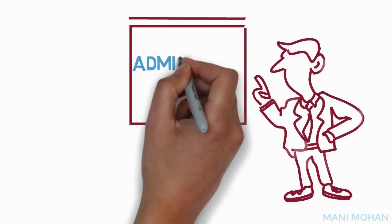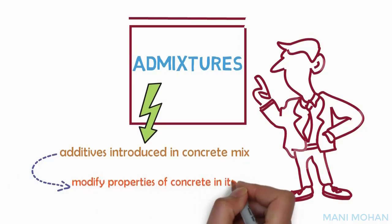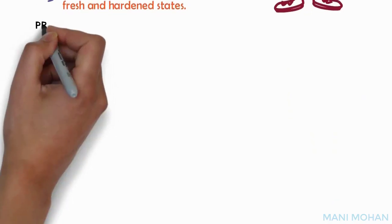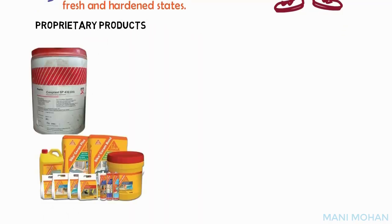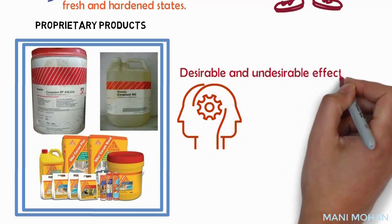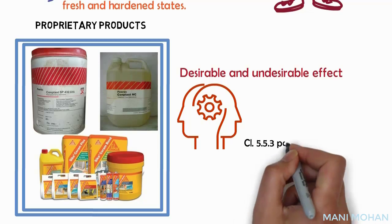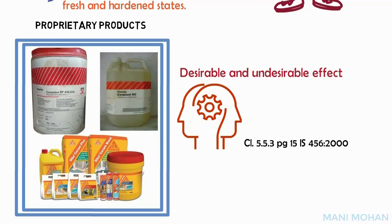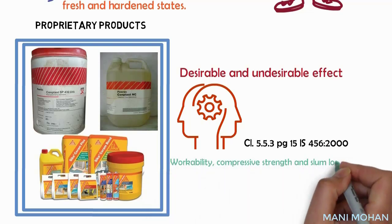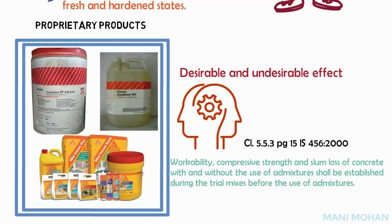Let us learn about admixtures. Admixtures are additives introduced in a concrete mix to modify the properties of concrete in its fresh and hardened state. Many proprietary products are currently available. Clause 5.5.3, page 15 of IS 456-2000 recommends that the workability, compressive strength, and slump loss of concrete with and without the use of admixtures shall be established during trial mix before use. Also, the use of admixtures should not impair durability or increase the risk of corrosion to reinforcement.